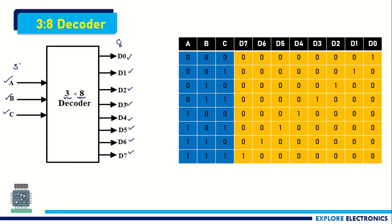The different sets of values for ABC as inputs are: 000, 001, 010, 011, 100, 101, 110, and 111 — all possible values of ABC are written here. For input 000, the decoder decodes this such that all outputs are zero and D0 is 1.